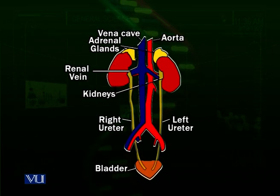The major organ involved in the human excretory system is the kidney. There are other accessory structures associated with kidneys. Let us have a look at a diagram showing the structure of the human excretory system.